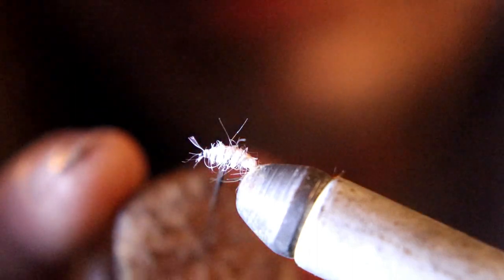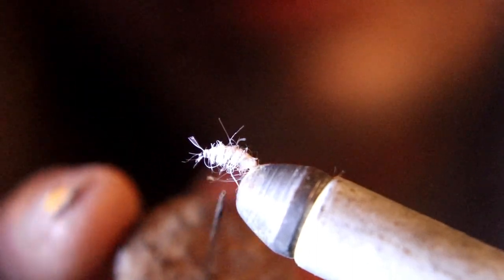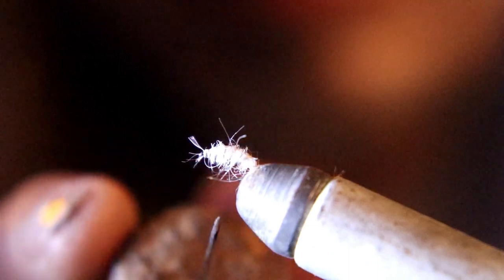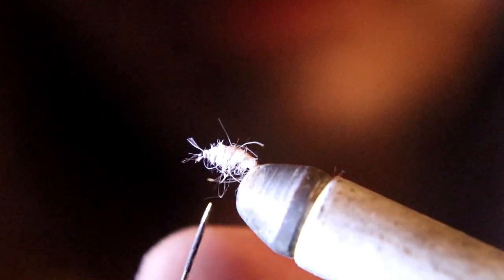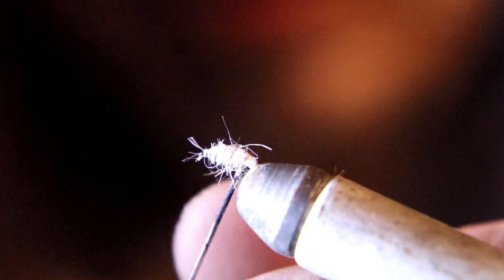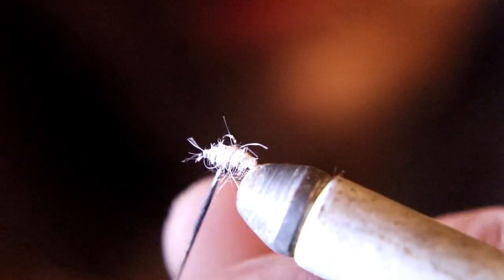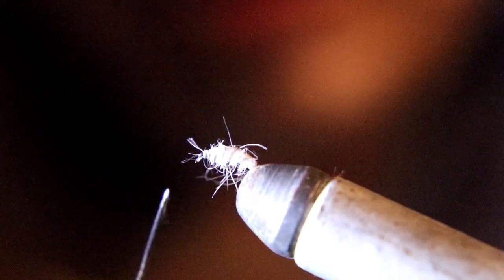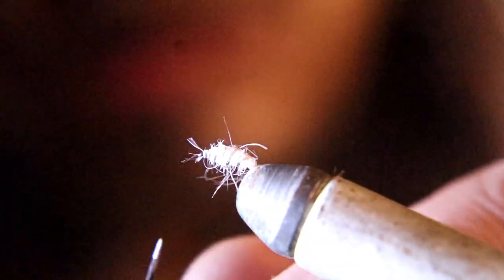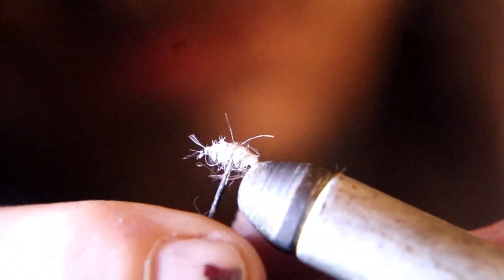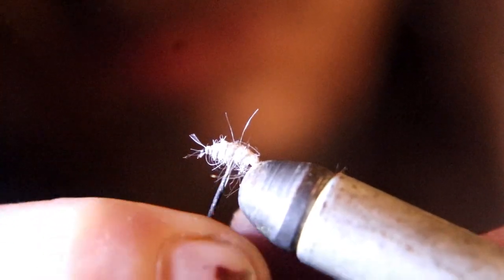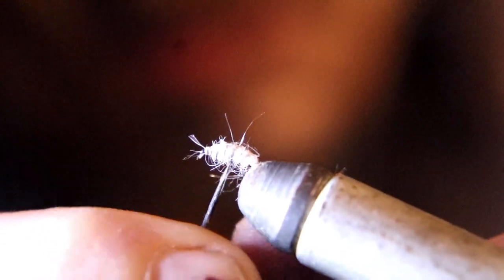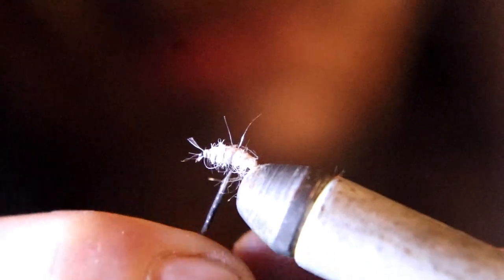Now what I have here is a needle stuck in a cork, and I use this as a dubbing picker to pick out the dubbing underneath this fly to make it look like all them little eggs hanging down out of this pattern. And that's it—there you got it, we got it tied up. Tie a couple of these up. They're deadly this time of year in the very early spring and winter, so tie some up and get them in your box.